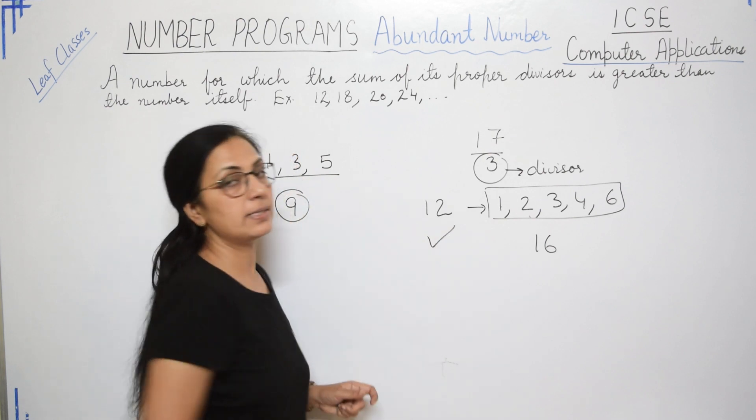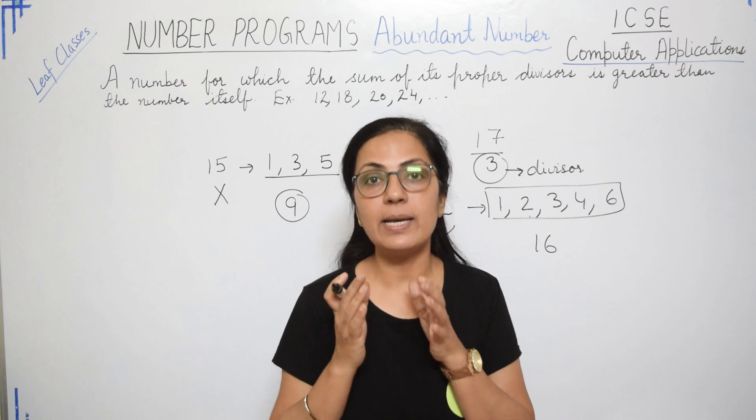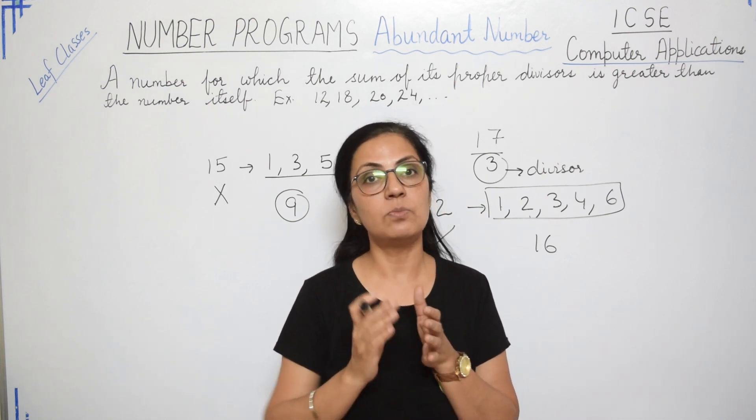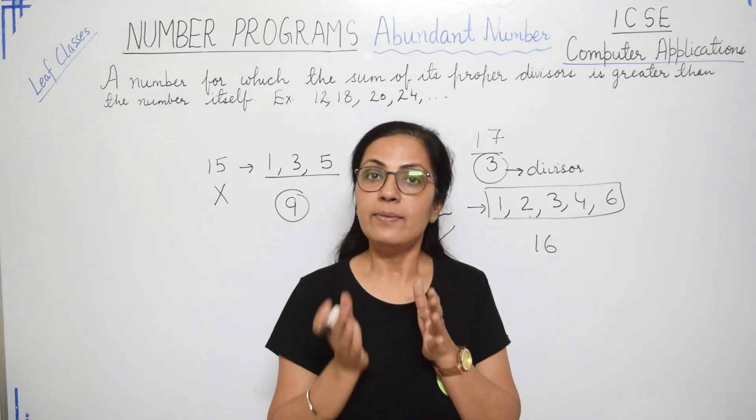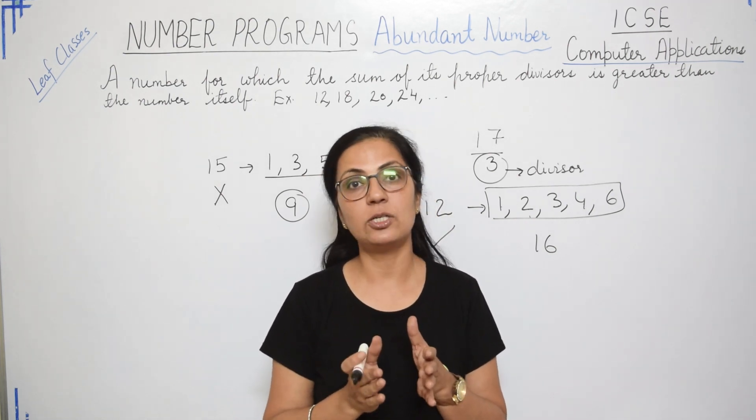So 9 is smaller than 15. So 15 is not the Abundant Number, whereas 12 is the Abundant Number. So where the sum of the proper divisors of the number is more than the number, then that number is known as Abundant Number. I hope it is clear to you.